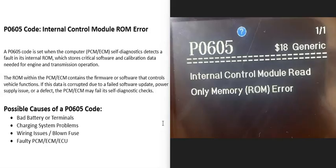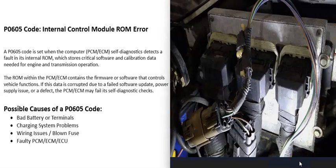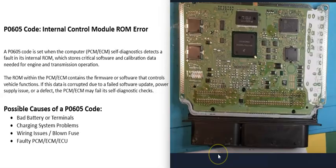Today I'm talking about a P0605 code — what it is and how you can go about fixing it. A P0605 code is the internal control module ROM error. Modern vehicles have computers built into them, and the main computer called the PCM or ECM is having a problem during self-diagnostic checks. These computers do self-diagnostic checks usually on startup, and the ROM, or read-only memory chip, is having some kind of problem.